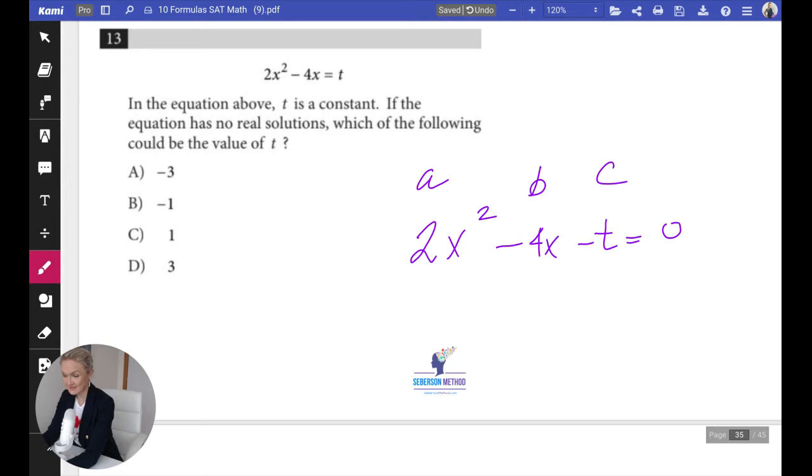Now they're asking you about the equation having no real solutions. Remember, if the equation has no real solutions then the discriminant has to be less than zero. Your discriminant has to be something negative, so b² - 4ac has to be less than zero.